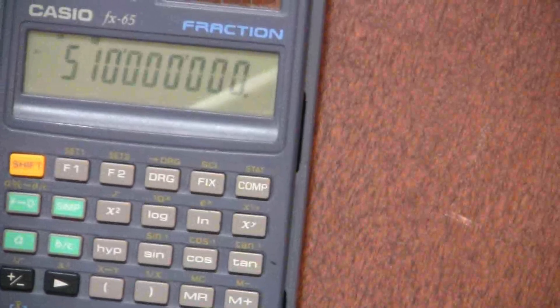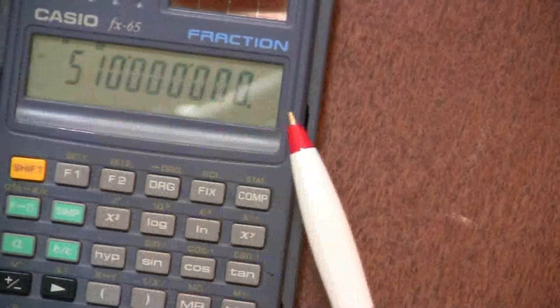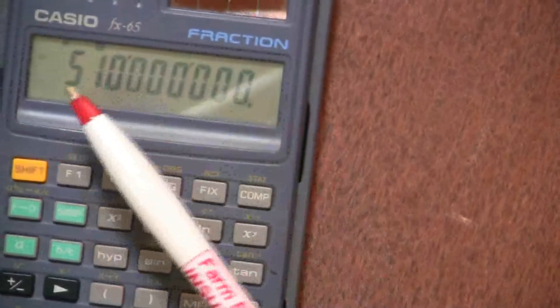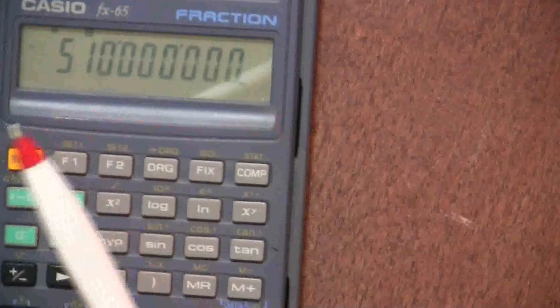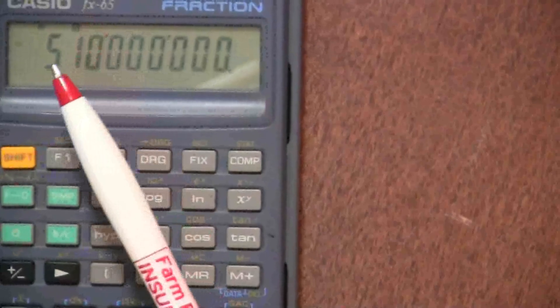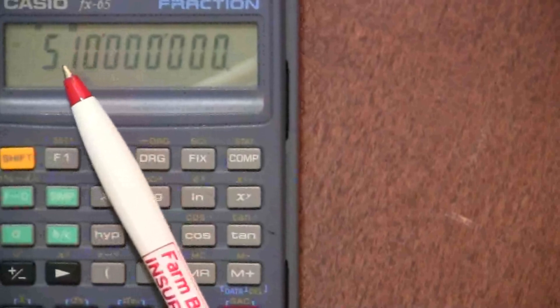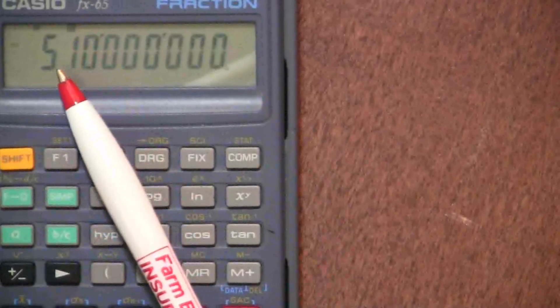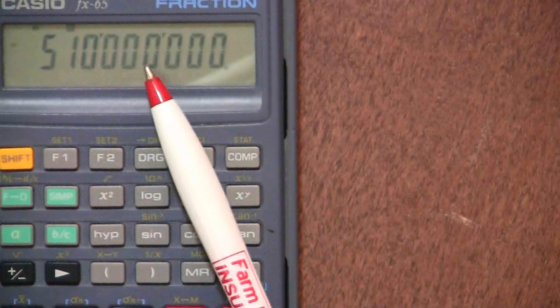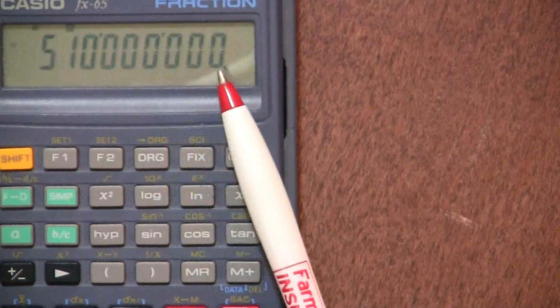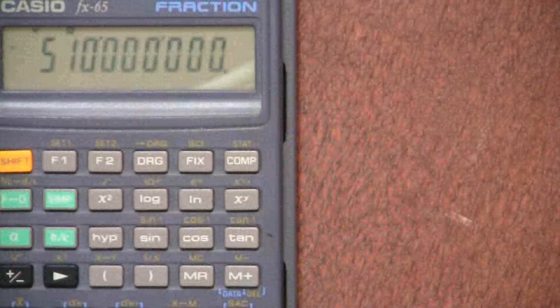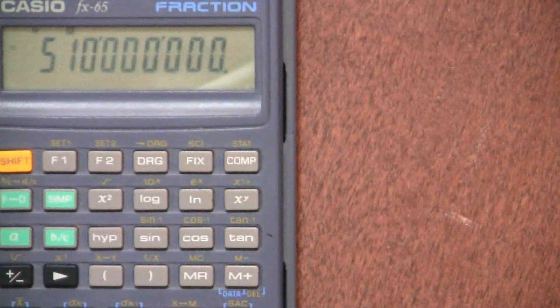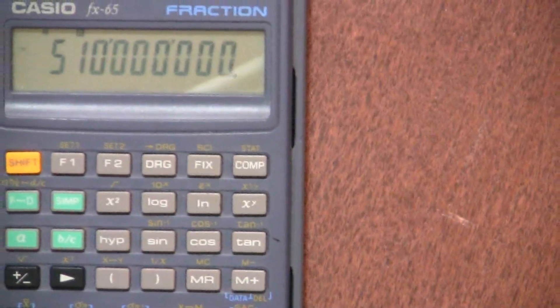And so, you'll notice when I press equals, it rewrites that in normal notation. Depending on your calculator, what mode it's in, it may or may not do that. But you'll see, if here was the decimal place originally, we move it 1, 2, 3, 4, 5, 6, 7, 8 places to the right. That's what we get there. Okay, so that is a very useful button. We'll be using that quite often.